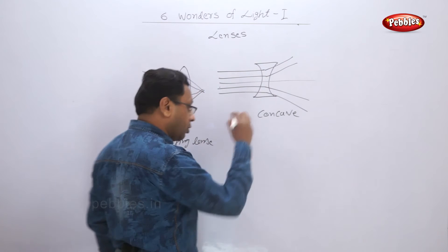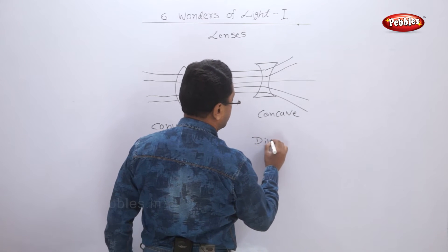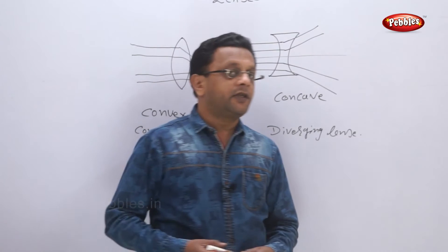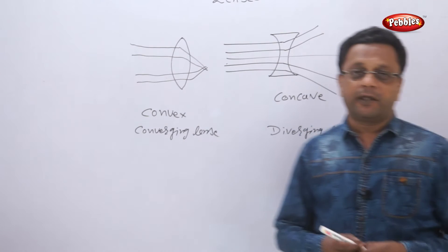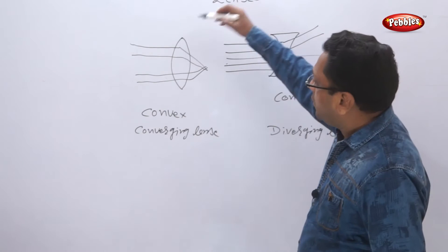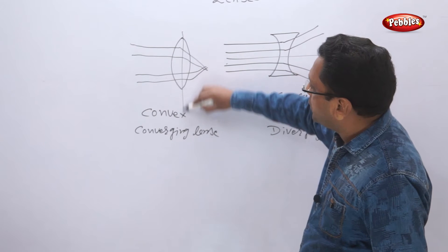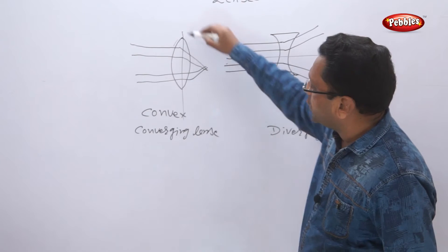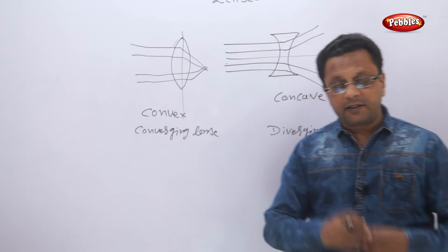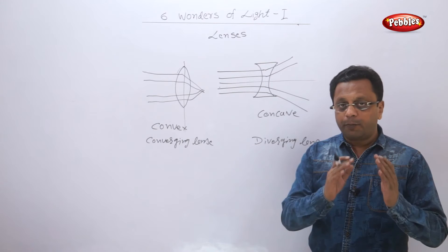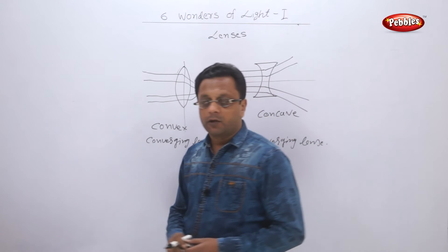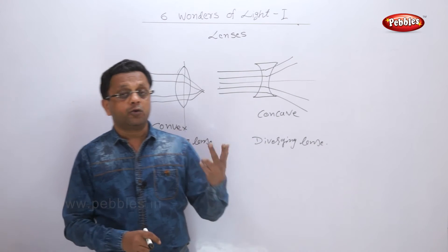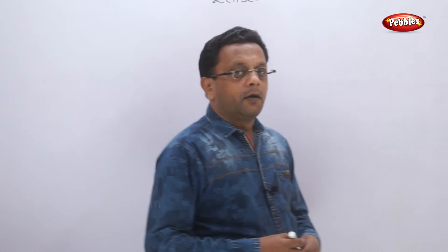Now we will see some nomenclature in case of lenses. You must have seen that if you cut this lens here, this is one part of a sphere, this is another part of a sphere. That means any lens is made up of two parts of the spheres. So definitely we will be having two foci, we will be having two centers of curvature.